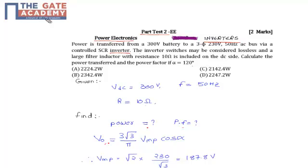To find the output voltage V0, the formula is V0 = (3√3/π) × VmP × cos(α). We know the value of alpha from the question, which is 120 degrees.